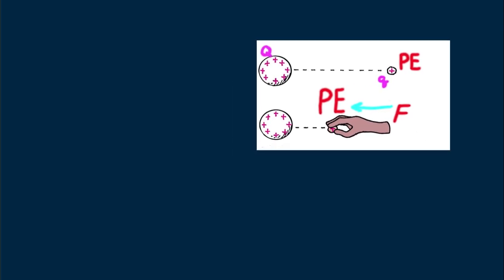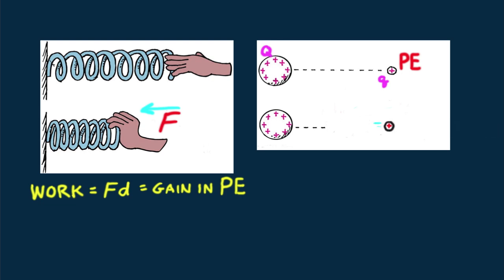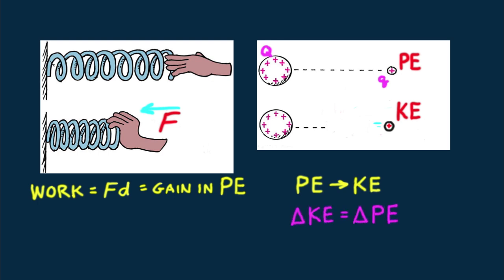Now if the charged particle is released, it will be repelled and fly away from the sphere. Potential energy transforms to kinetic energy. In its flight, it passes its initial position. At that initial position, its gain in kinetic energy will be equal to the amount its potential energy decreases. Conservation of energy rules.